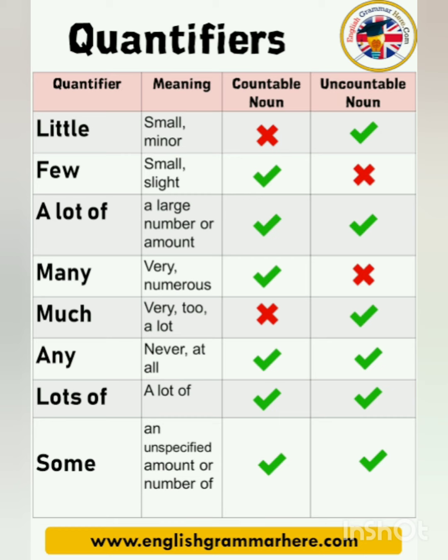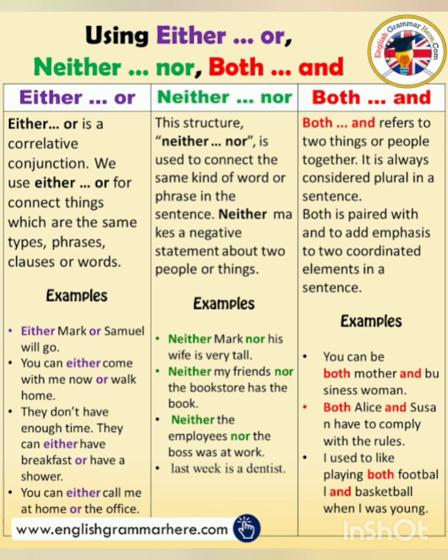Some quantifiers like few, a lot of, many, lots of, and some are used with countable nouns — nouns we can count easily. Some quantifiers can be used with both countable and uncountable nouns. Then there is the use of neither/nor, either/or, both, and all.